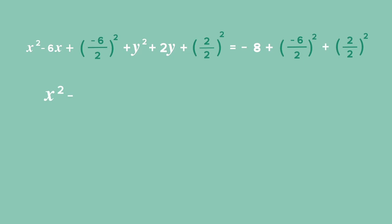Then simplify: we get x² - 6x + 9 + y² + 2y + 1. On the other side of the equation, we get -8 + 9 + 1 which is 2. The two trinomials can now be factorised to get (x - 3)² + (y + 1)² = 2.